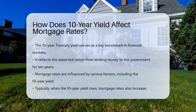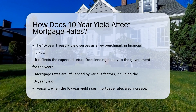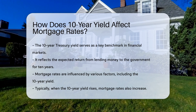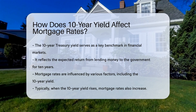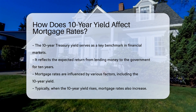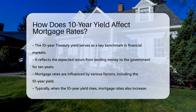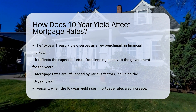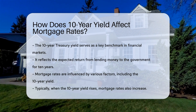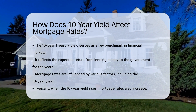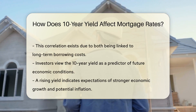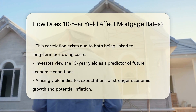The 10-year Treasury yield is a critical benchmark in the financial markets. It represents the return investors expect from loaning money to the government for 10 years. Mortgage rates are influenced by various factors, including the 10-year yield. When the yield rises, mortgage rates typically follow suit. This correlation exists because both are tied to long-term borrowing costs.